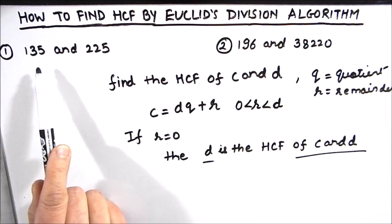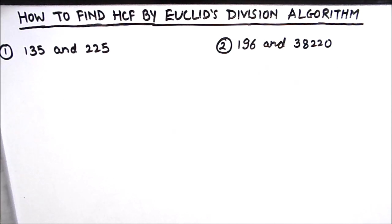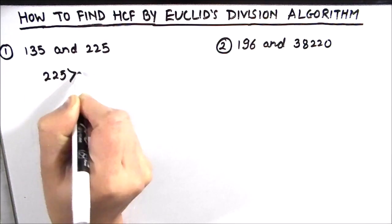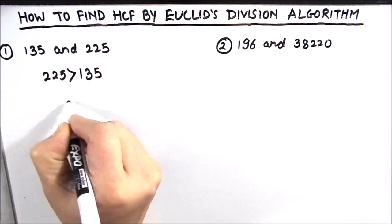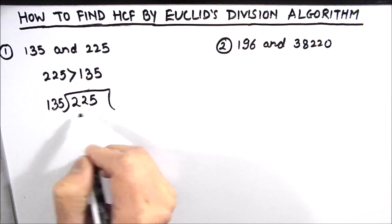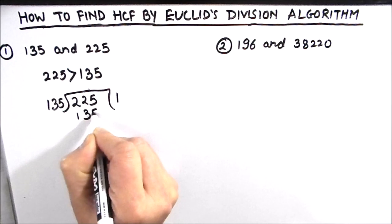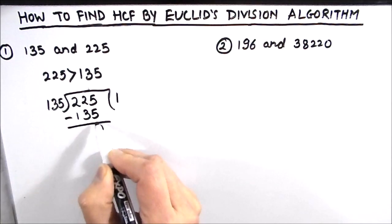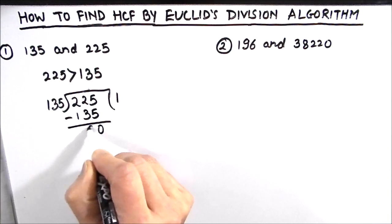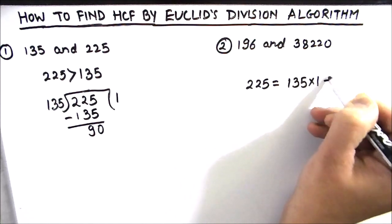Let's find the HCF of 135 and 225 using Euclid's algorithm. First we check which number is bigger — 225 is greater than 135. So we divide 225 by 135. 135 times 2 would be more than 225, so we use 135 times 1, which is 135. Subtracting: 5 minus 5 is 0; 2 minus 3 is not possible, so we borrow — 12 minus 3 is 9. So we write 225 = 135 × 1 + 90.